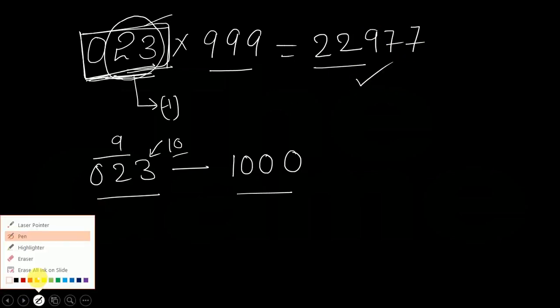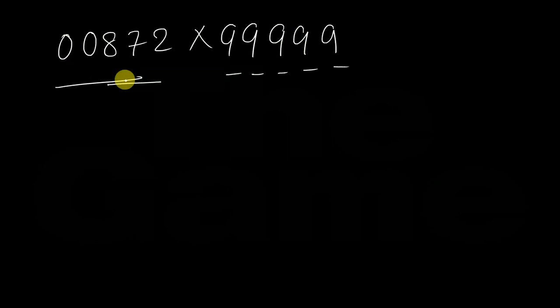Let's consider another example. If we are asked to multiply 872 into 99999. How many 9s are there? 1, 2, 3, 4, 5 and here we are having a 3 digit number. So we will be placing 2 zeros before this number. Why? Because we have to convert this number into a 5 digit number without changing its value. Now number of digits are equal. So, we can apply our formula. We can apply our trick.